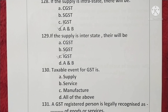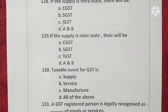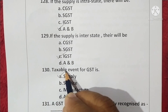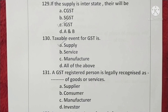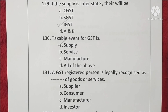Question 130. The taxable event for GST — options are supply, service, manufacture, and all of the above. The taxable event for GST is supply. Option A is correct. Question 131. A GST registered person is legally recognized as a supplier of goods or services. Option A is correct.